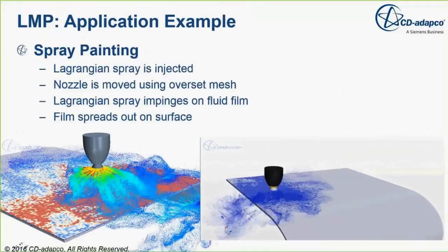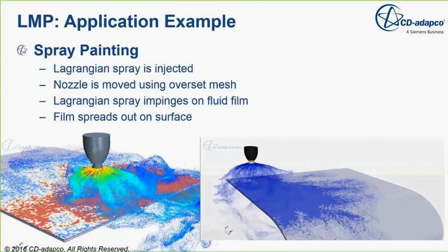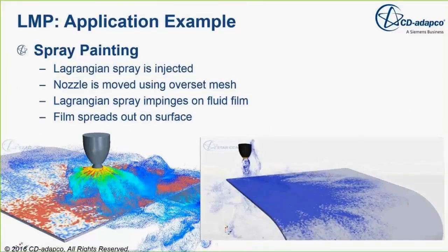A typical LMP application is demonstrated here: a spray painting problem on a surface where an overset mesh is placed on a moving spray arm. The arm sprays droplets that impinge on the wall. A fluid film model is invoked with zero initial thickness, and the paint thickness starts increasing as the arm moves around the surface.